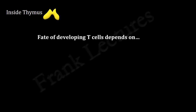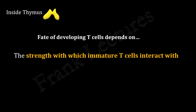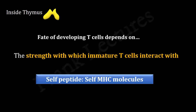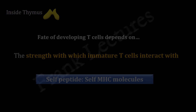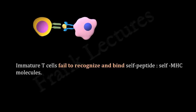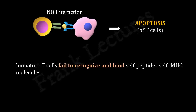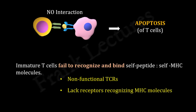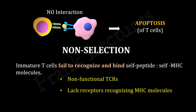According to scientists, the fate of developing T-cells in the thymus is determined by the strength with which immature T-cells interact with self-peptide self-MHC complexes. If immature T-cells fail to recognize and bind the self-antigen self-MHC molecules, they undergo programmed cell death or apoptosis. Most of these cells have non-functional T-cell receptors, and they may also lack receptors recognizing MHC molecules. So lack of interaction between these T-cells and self-peptide self-MHC molecules results in death of T-cells. This selection event is known as non-selection.